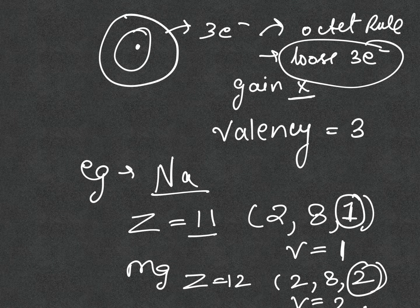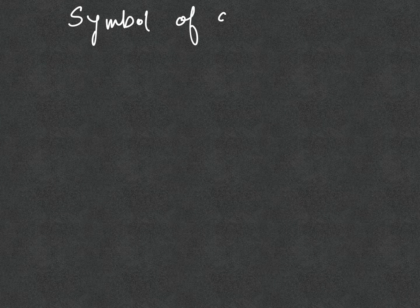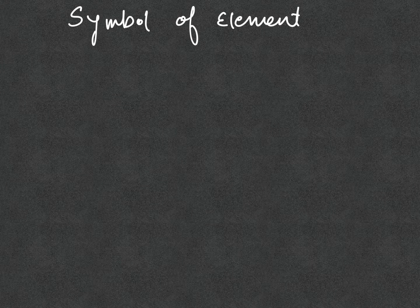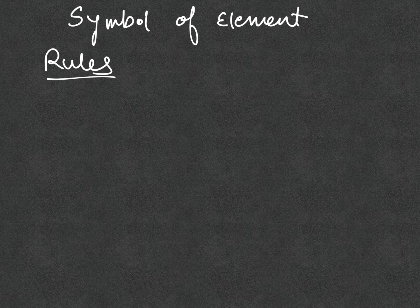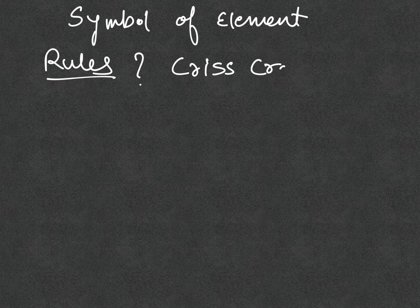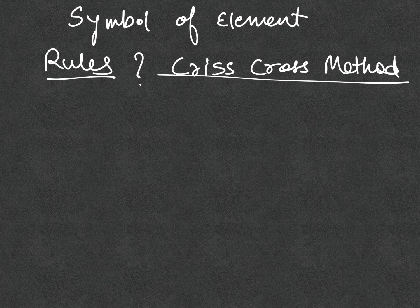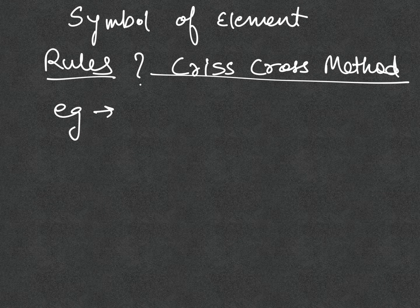Another thing you need to know is the symbol of the element, which is important. A list is given in the NCERT that you need to memorize. Moving on to the rules of how to write the chemical formula, we need to follow a method known as the crisscross method. Let's see what exactly the crisscross method is, using the common example of water.